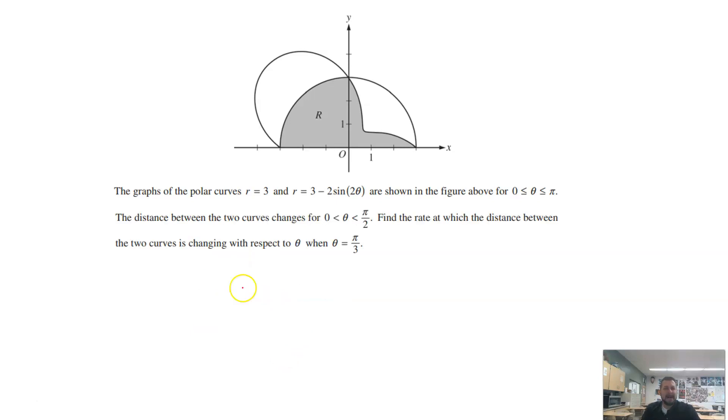On letter C, we've got the distance between the two curves from 0 to pi halves is changing. So we're just talking about over in the first quadrant here, it wants to find the rate at which the distance between the two curves is changing when theta equals pi thirds. Well, when we're talking about the rate at which something is changing, what we're looking for is the derivative for the distance between the two. The way that we find the distance between any two things is we just subtract those two things. So this right here, that's not my r, that's my distance between the two. That is how I would find the distance between those two. And then what I would do is I would just take the derivative and plug in pi thirds.